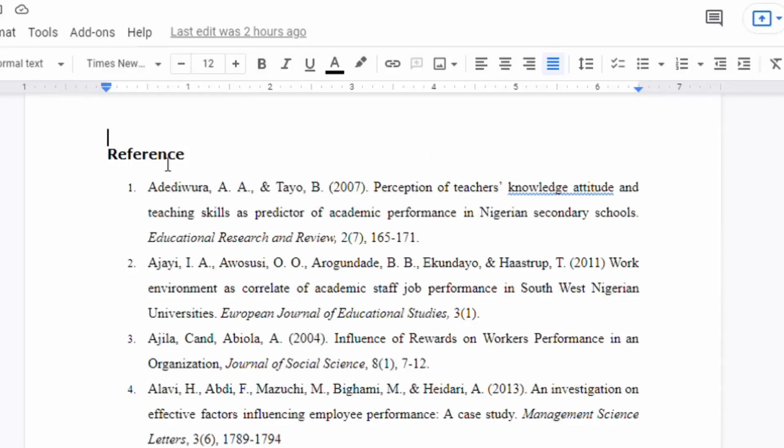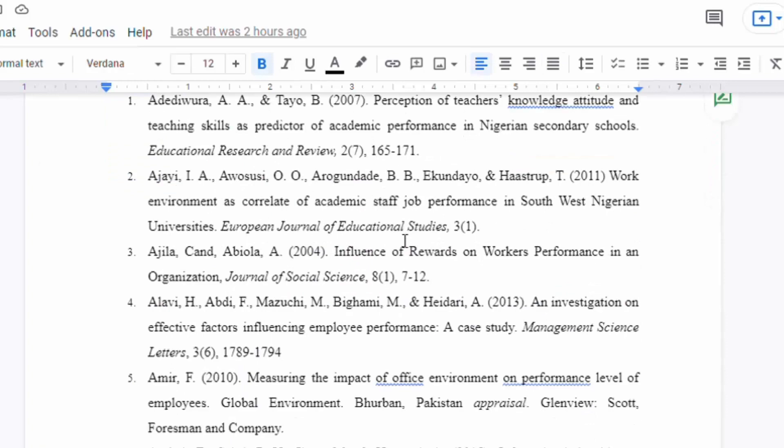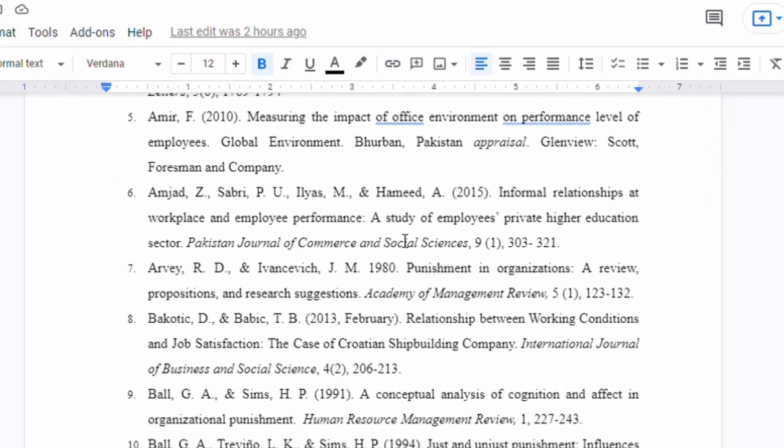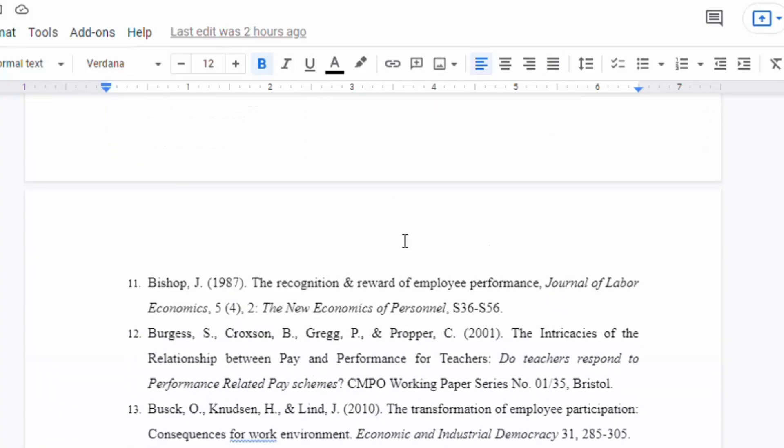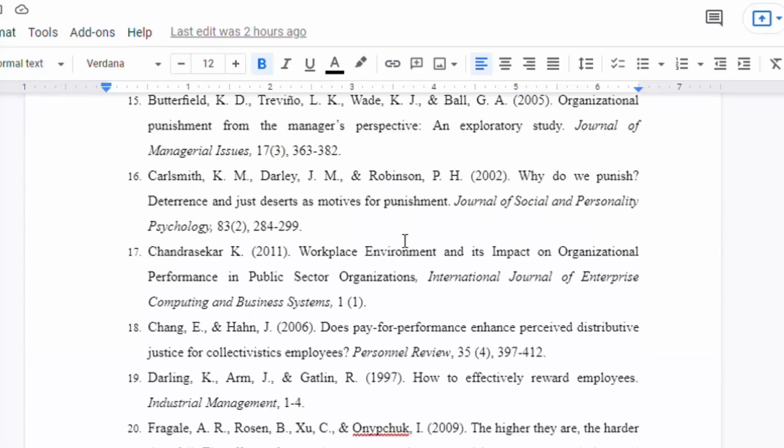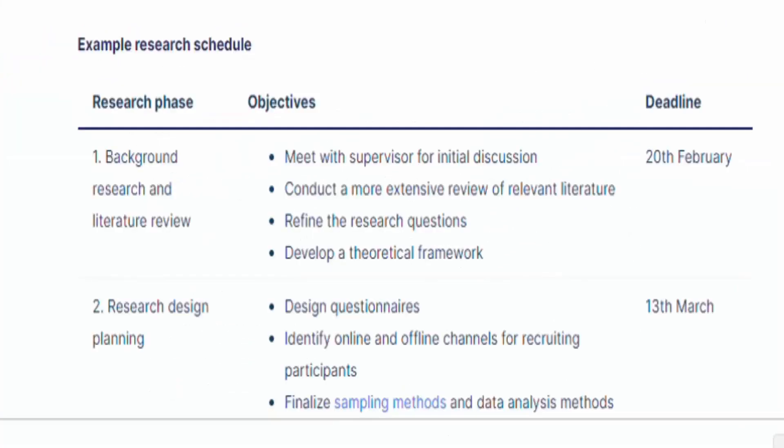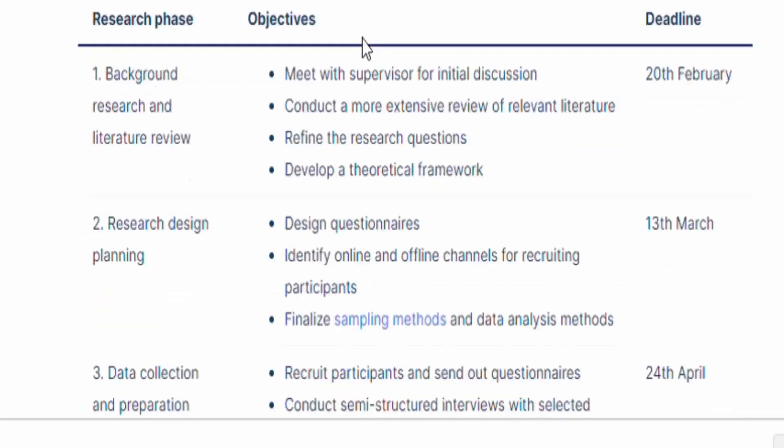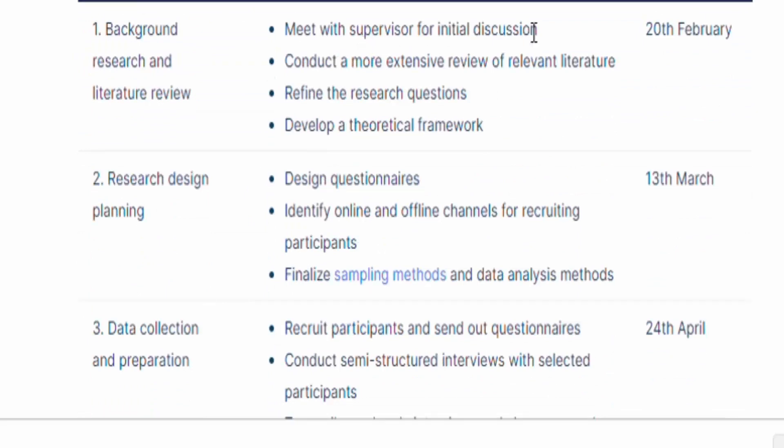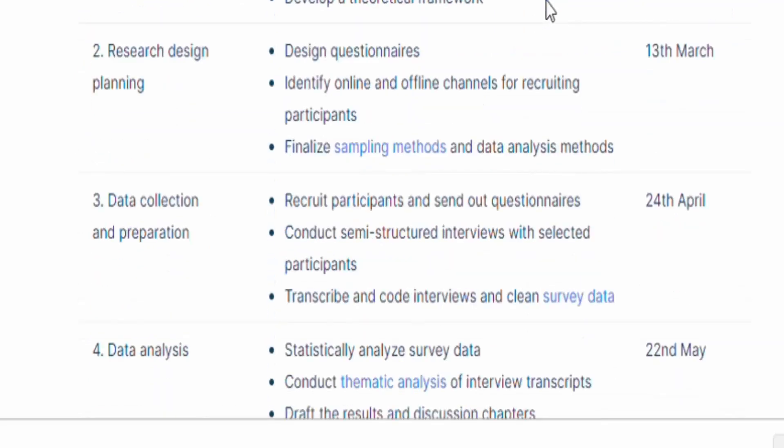Reference list or bibliography. Your research proposal must include proper citations for every source you have used, and full publication details should always be included in the reference list. Research schedule. In some cases, you might have to include a detailed timeline of the project, explaining exactly what you will do at each stage and how long it will take. Check the requirements of your program or funding body to see if this is required.